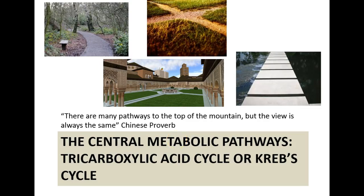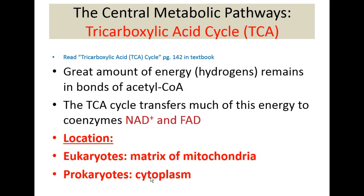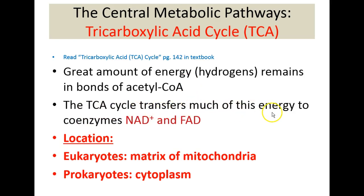This next PowerPoint will focus on the tricarboxylic acid cycle, also known as the Krebs cycle. At the end of the intermediate or transition step after glycolysis, pyruvate has been decarboxylated into a two-carbon compound called acetyl coenzyme A. Acetyl coenzyme A retains many hydrogen atoms which represent energy. The TCA cycle will transfer much of this energy in the form of hydrogen atoms to the electron carriers.